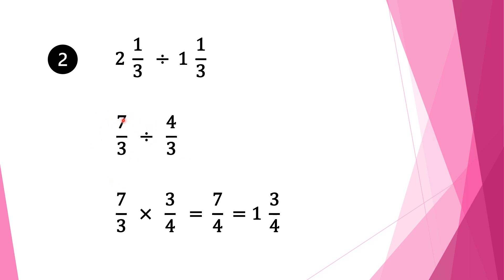Now we have a normal fraction division. We keep the first fraction 7 over 3 as it is, change the division sign into multiplication, and take the reciprocal of the second fraction. It is 4 over 3, so we write it down as 3 over 4. We check whether we can cancel anything — we can cancel 3 and 3. So 3 goes into 3 once. We multiply our numerators: 1 times 7 is 7. And our denominators: 1 times 4 is 4. Our solution is 7 over 4, but this is an improper fraction, so our final solution is 1 and 3 over 4.